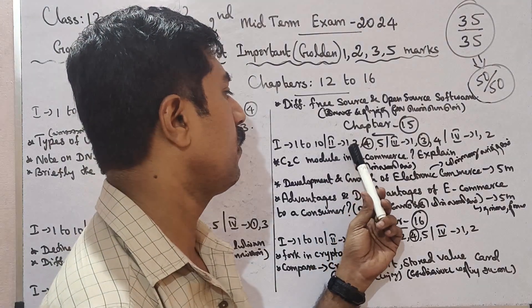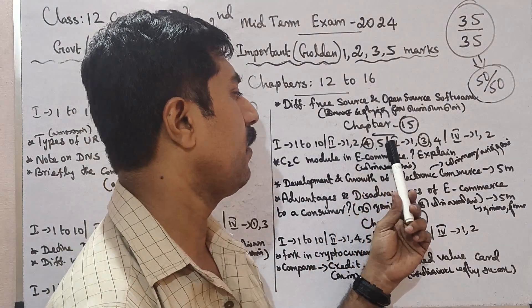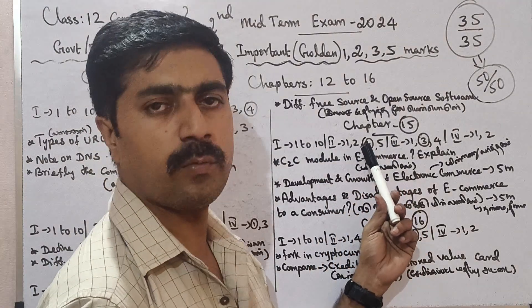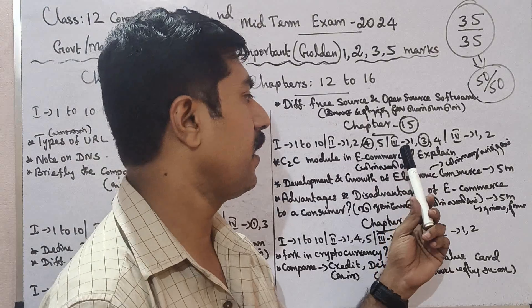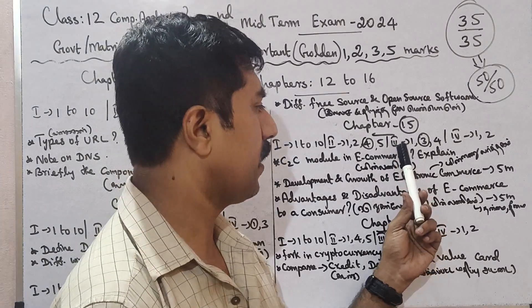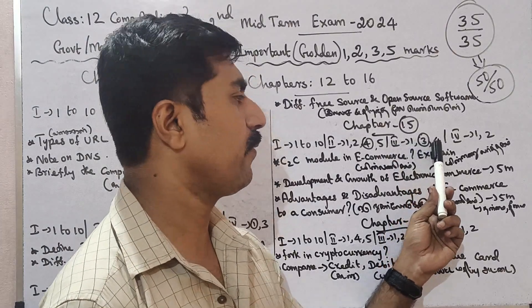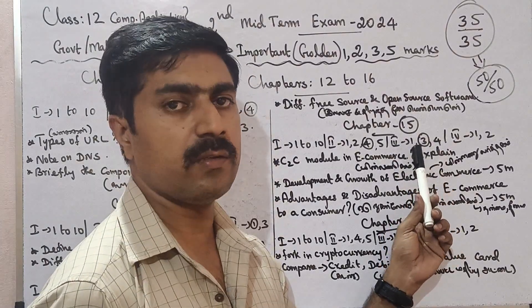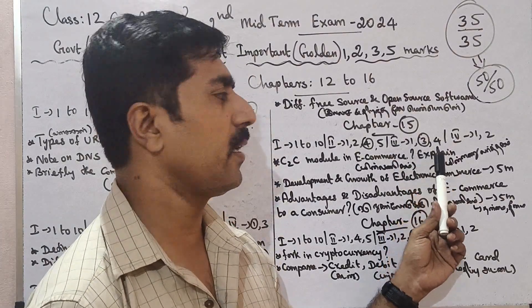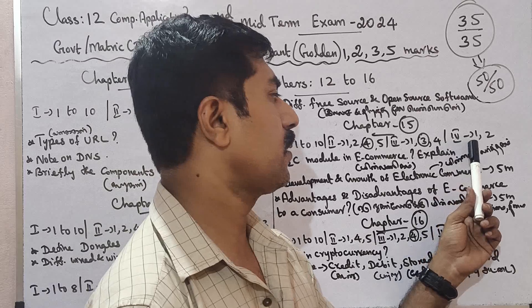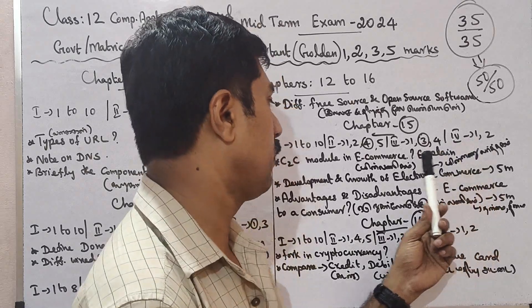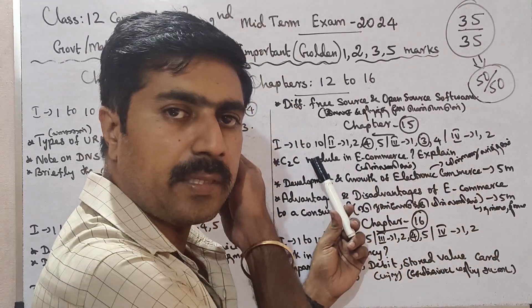In Chapter 15, the mark allocations are: 1 mark, 2 mark, 10 marks total, 2 mark, 1 mark, 2 mark, 5 mark, 4 mark, 1 mark, 2 mark, 3 mark, 4 mark, 1 mark, 2 mark, 3 mark, 3 mark, 2 mark, 3 mark, 4 mark, 1 mark, 2 mark inside.